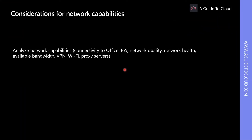When analyzing the existing network capabilities, consider the following areas in your network access: connectivity to your Office 365, quality of your network connectivity, available bandwidth, clients connected over wireless, NAT pool size, network health determination, VPN, Wi-Fi, proxy servers, etc.